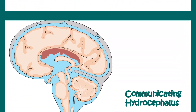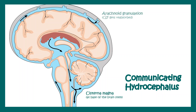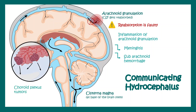In communicating hydrocephalus, there is a reabsorption defect. Normally CSF is reabsorbed via the arachnoid villi or arachnoid granulation, but here that reabsorption is faulty, leading to accumulation. Inflammation of the arachnoid granulation is a key cause, which may result from bacterial meningitis or hemorrhage in the subarachnoid space. There could also be choroid plexus tumors causing overproduction of CSF.